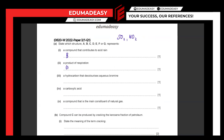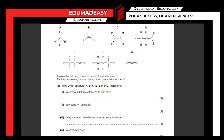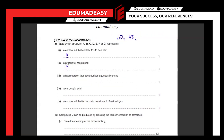Next is a hydrocarbon that decolorizes aqueous bromine. This is a test used in hydrocarbons to identify if it's saturated or unsaturated. A saturated hydrocarbon contains only single carbon-carbon bonds, while an unsaturated hydrocarbon contains double or even triple carbon-carbon bonds. Something that will decolorize aqueous bromine would be an unsaturated hydrocarbon containing a double bond. You can see that C is an alkene as it contains that double carbon-carbon bond, so it would decolorize aqueous bromine.